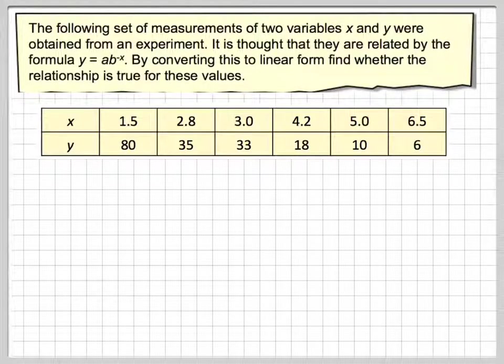Conversion to linear form. The following sets of measurements for two variables, x and y, were obtained from a science experiment. It's thought that they are related by the formula y equals ab to the minus x. By converting this to linear form, find whether the relationship is true for these values. Here we have the x values and here we have the y values.